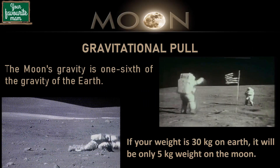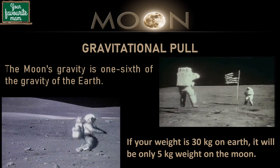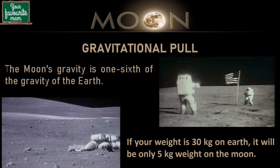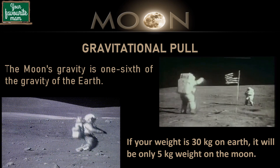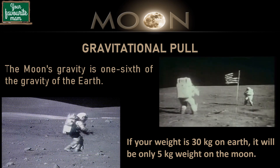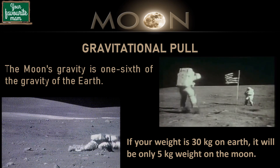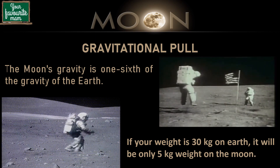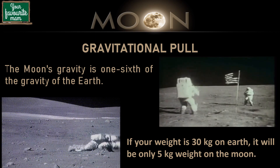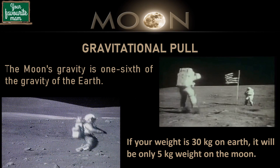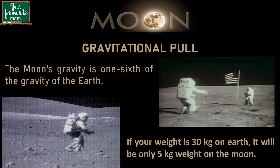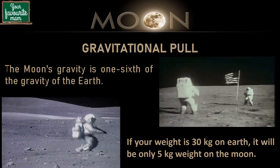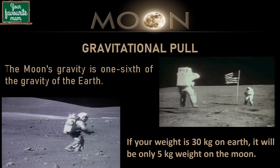In everyday talk, we say things fall because the earth's gravity pulls on them. Similarly, like earth, the moon also has its own gravity. But since the moon is much smaller than the earth, the pull of gravity on the moon is about one-sixth that of earth. So any object on the moon weighs one-sixth of its weight on earth.